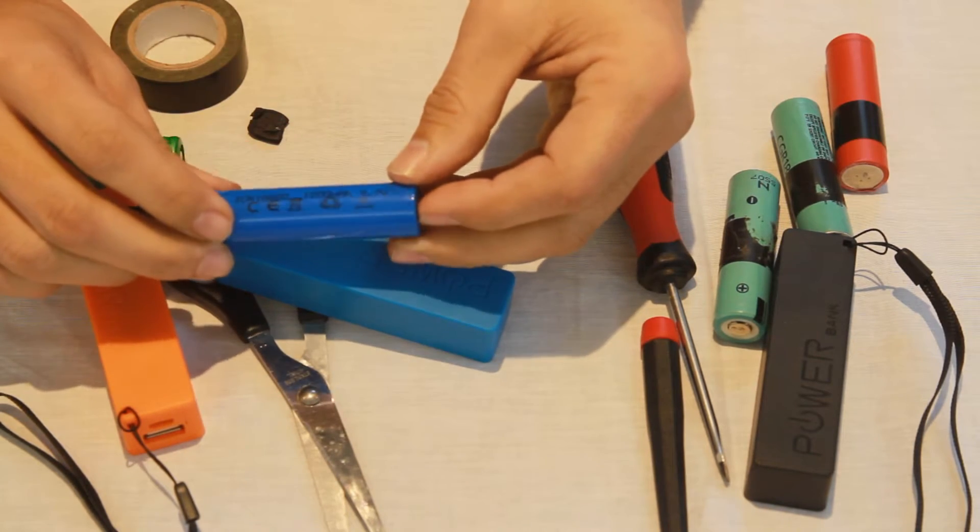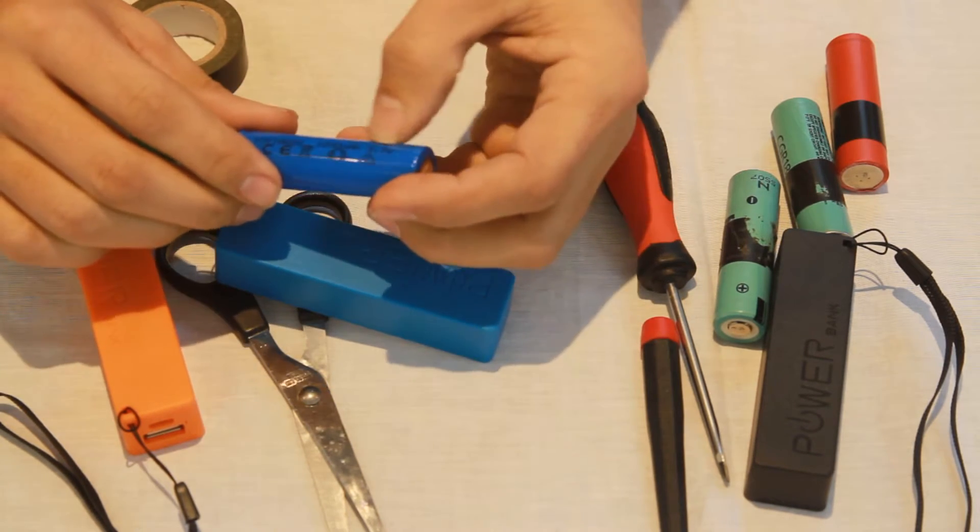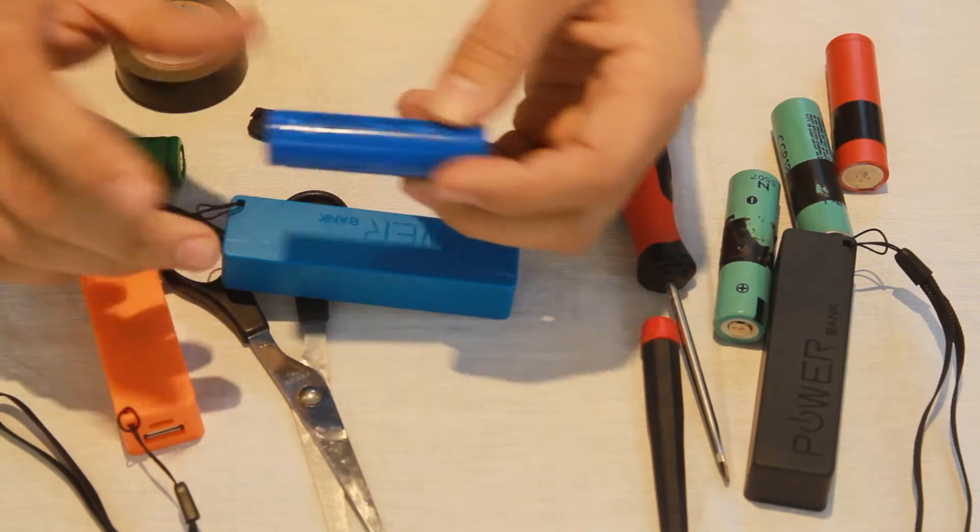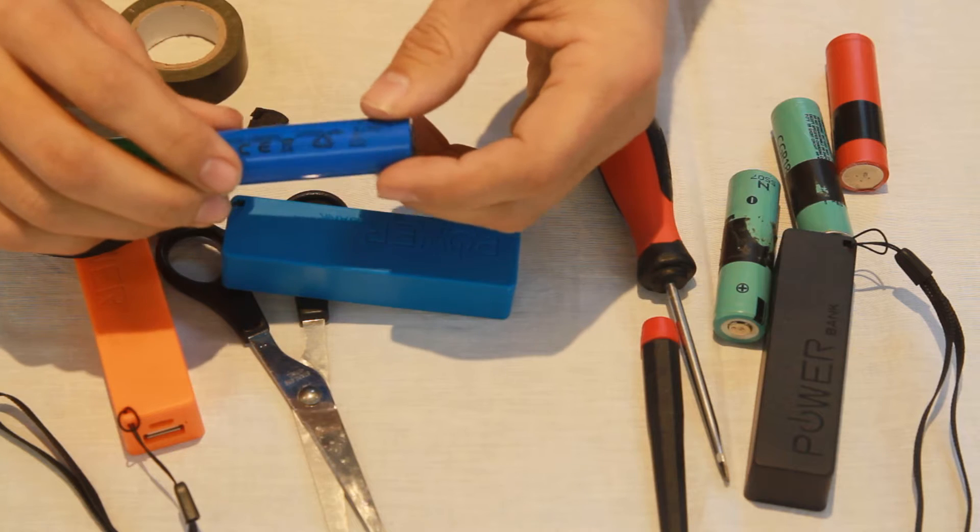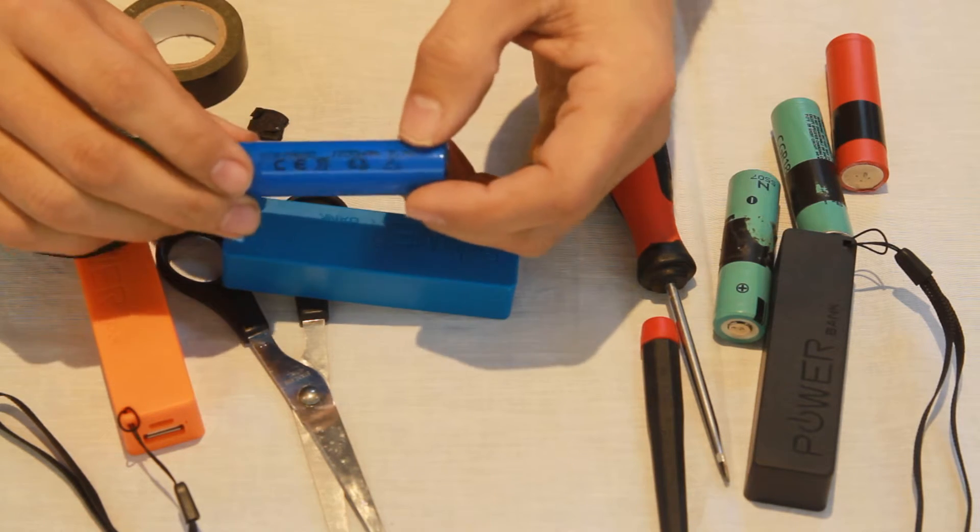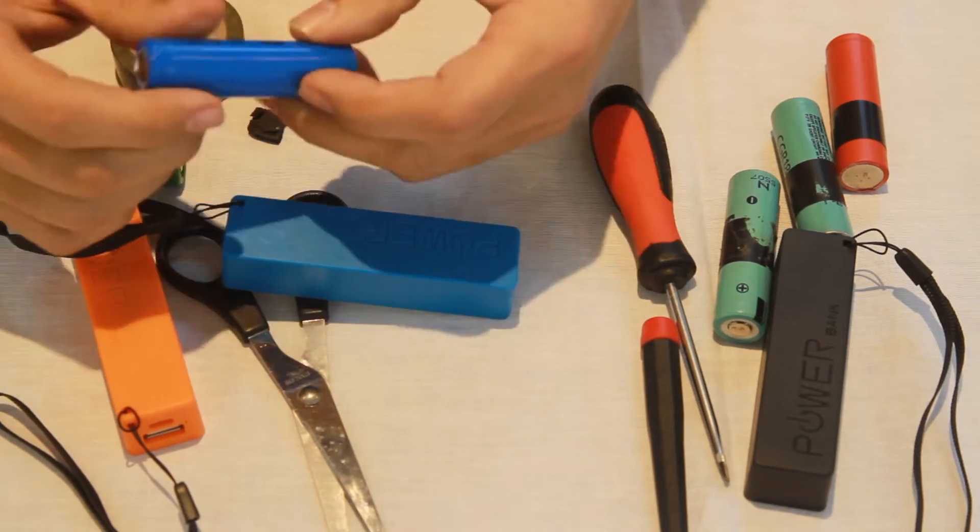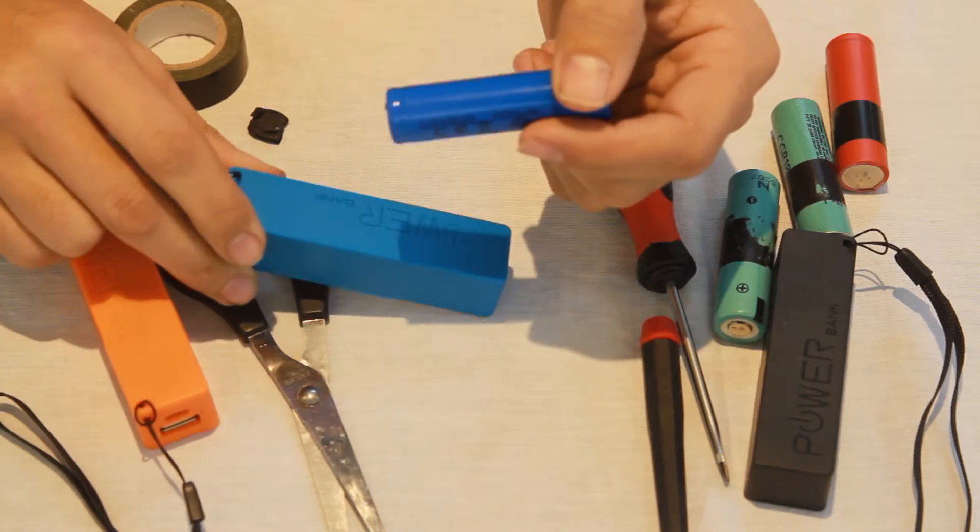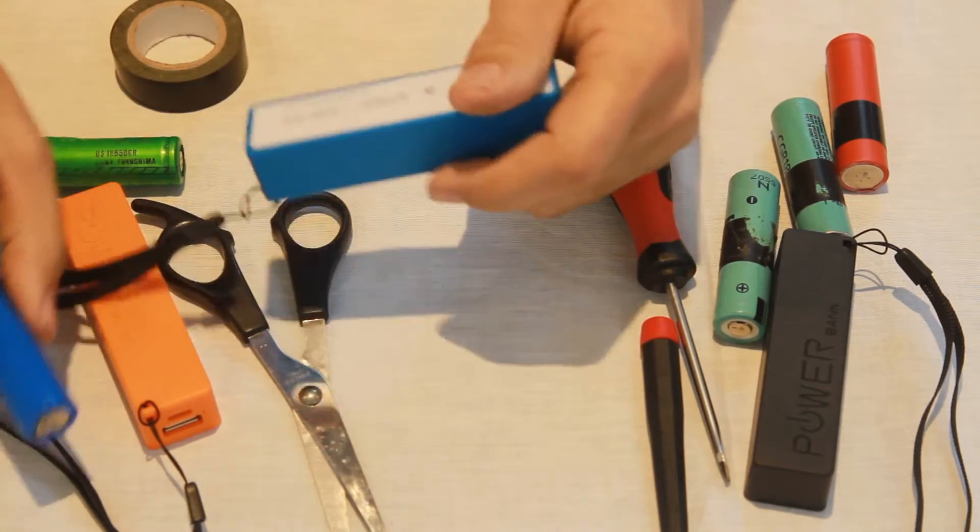They're only 3.7 volts as well, so by the time it's charged your phone you're probably only looking at about 800 or 900 milliamp hours of power. You'll be very lucky if you get a full charge out of your phone with one of these. But by the time we've upgraded it, you should get a full charge out of your phone and maybe another half charge as well.